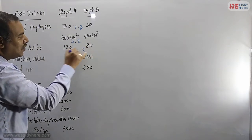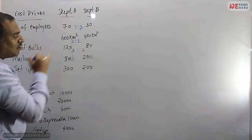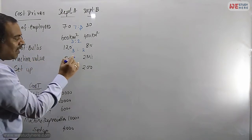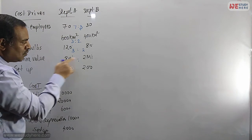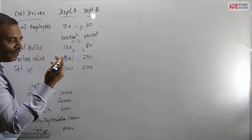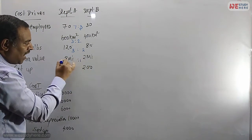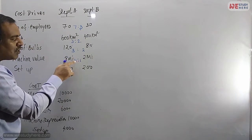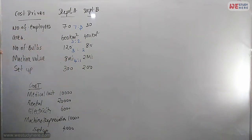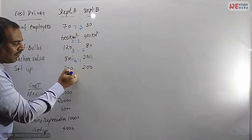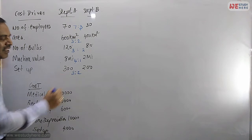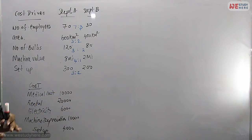Divide 12 and 8 by 4: that gives 3 is to 2. Machine value: 8 million to 2 million. Divide both by 2: that gives 4 is to 1. Setup cost: 300 to 200. Divide by 100: that gives 3 is to 2. So we have simplified all the ratios according to each cost driver for Department A and B.